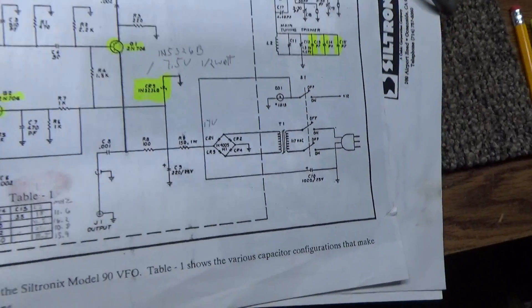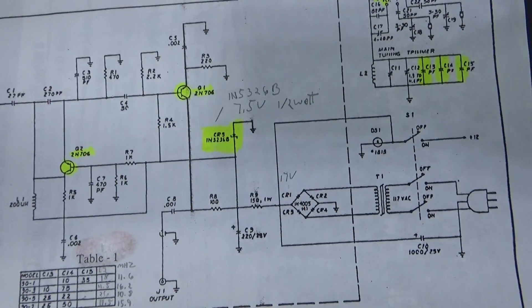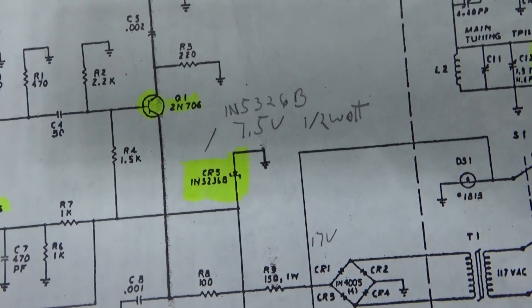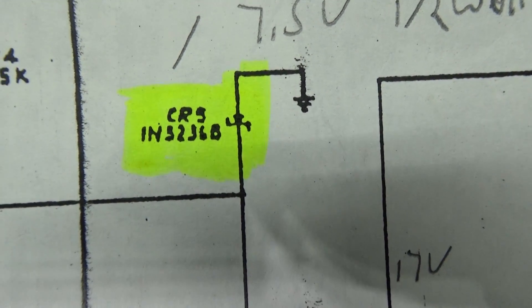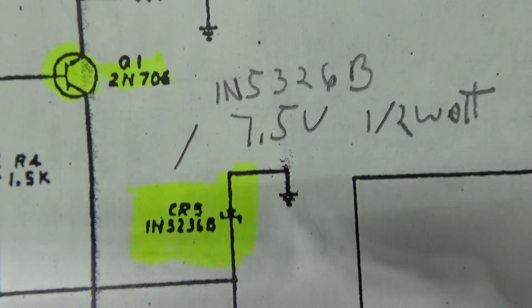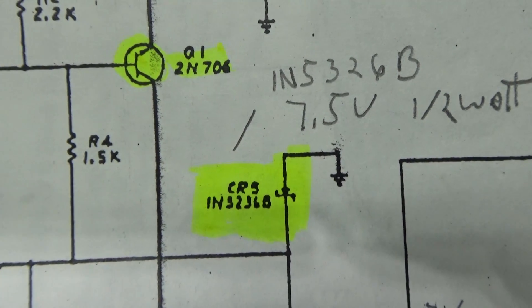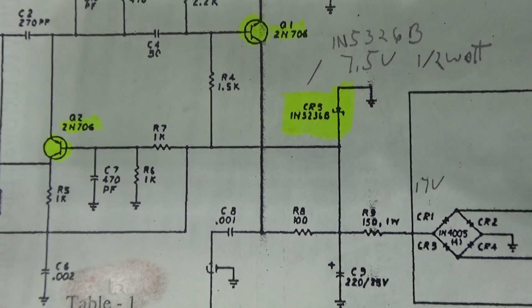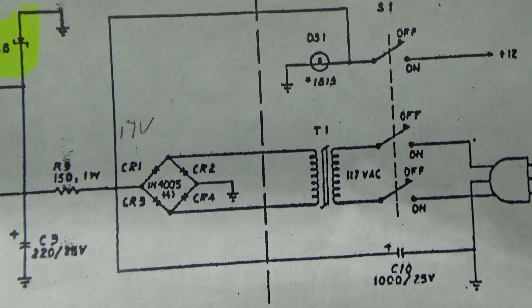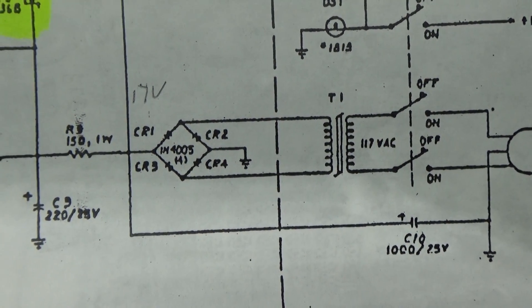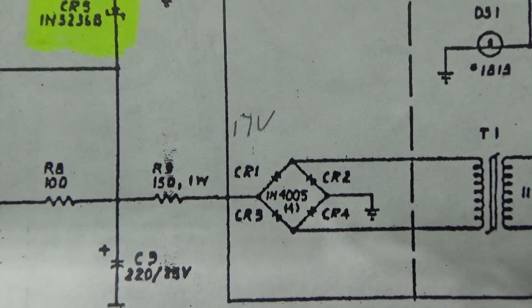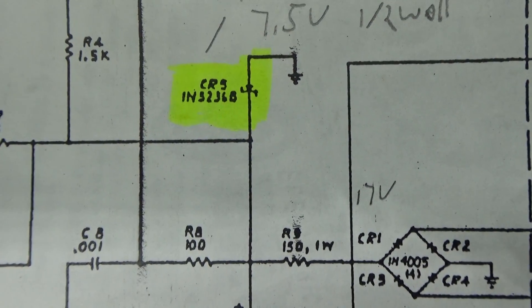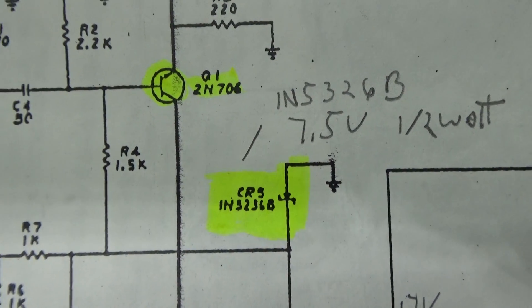This is the schematic here and I got some of the highlights highlighted. If you see that CR5, the Zener diode there, it's a 7.5 volt Zener diode and that regulates the voltage out of this power supply here. The bridge rectifier and the cap, you got 17 volts coming out in a dropping resistor, and that Zener diode knocks it down exactly 7.5 volts.